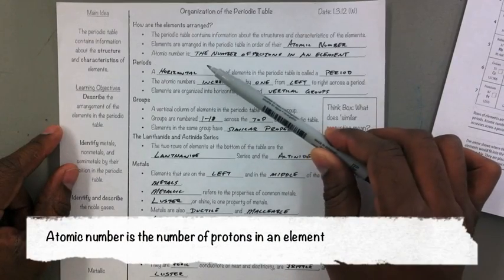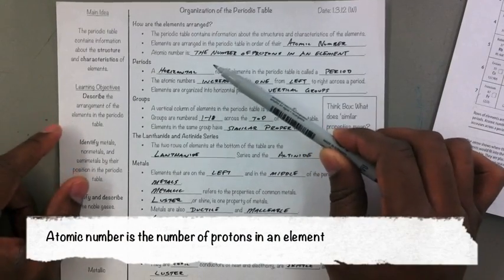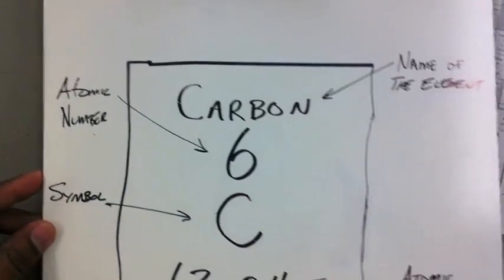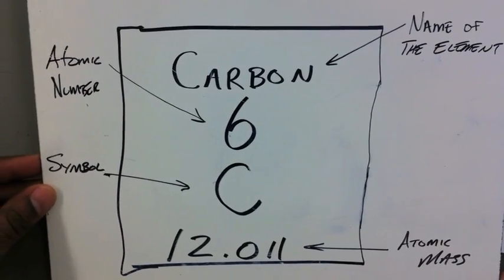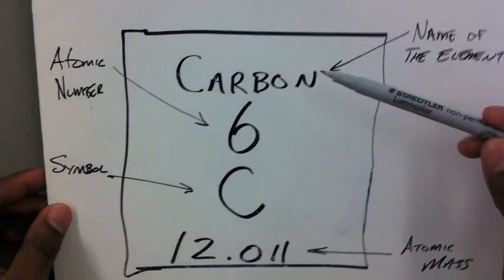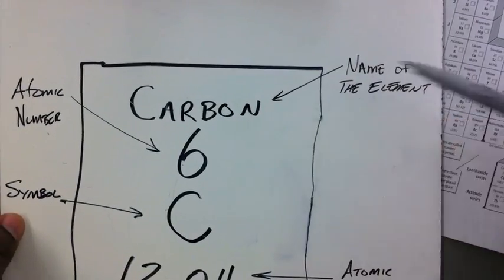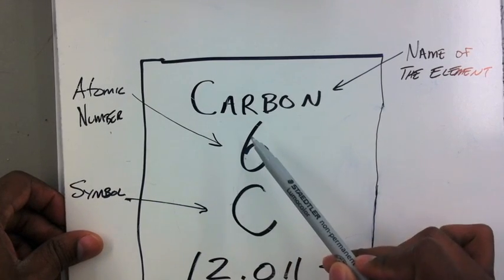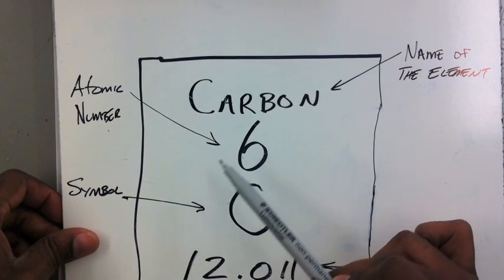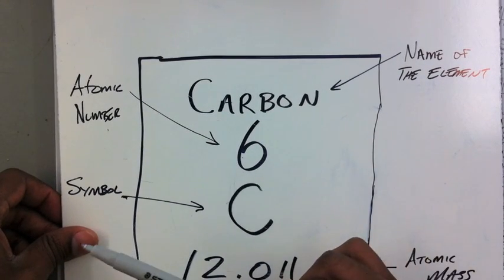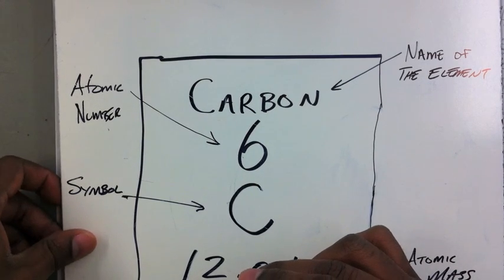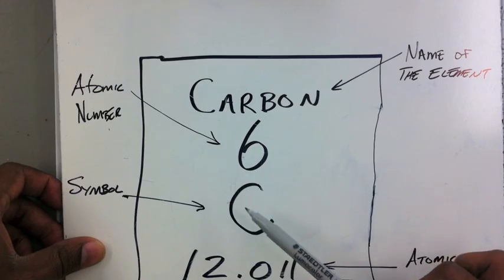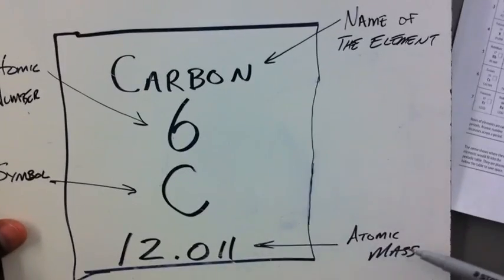Atomic number is the number of protons in an element. Each block on the periodic table contains a certain amount of information. Each element has the name of the element. In this case, we're using carbon. The atomic number, in this case a six, and as we've just stated, the atomic number also tells you the amount of protons in that element. It has the symbol for the element, which for carbon is C, and the atomic mass.